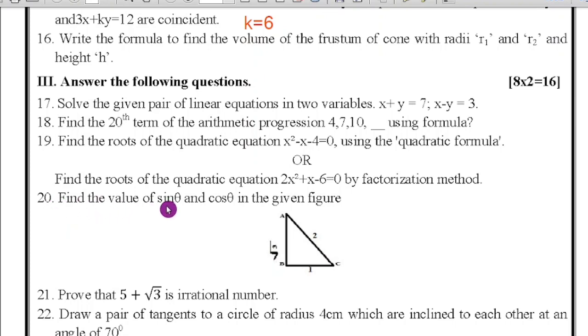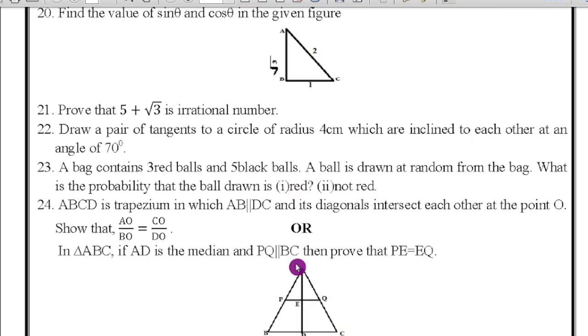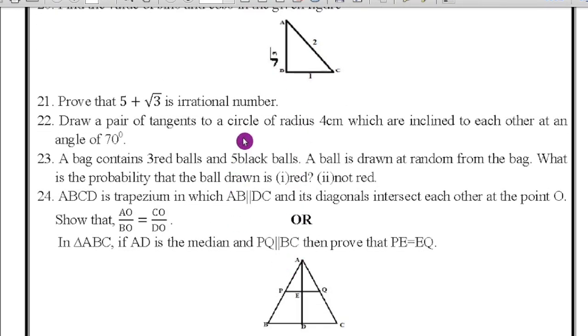Question number 20: find the value of sin θ and cos θ in the given figure. Here sin θ they are asking. We know the value of sin θ, that is opposite divided by hypotenuse. Here which is the opposite? √3. So √3/√2 is the answer. Sin θ = √3/√2. Cos θ = 1/√2. Next question number 21: prove that 5 + √3 is an irrational number. Very easy.